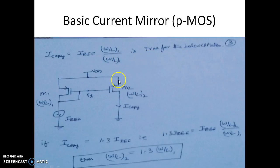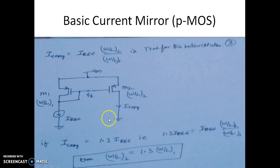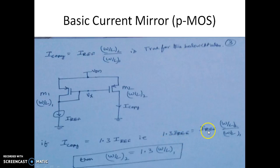This analysis is true for the PMOS circuit also. So we have a PMOS circuit where the drain and gate are shorted. This is our I_reference. I_copy is again given by W/L of 2 divided by W/L of 1 multiplied by I_reference.